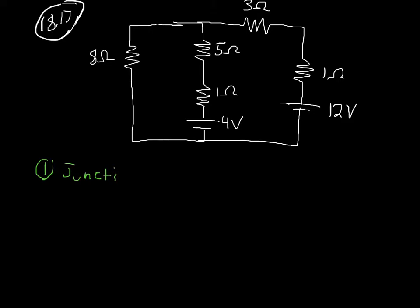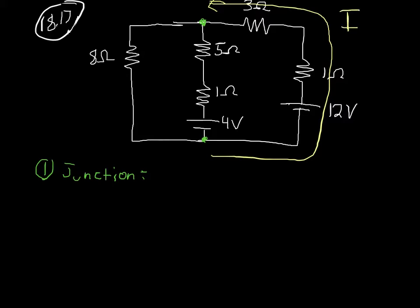First we want to identify where the junctions are so that we know where to apply this rule. I see two junctions — two places where the current can split off. Junction number one and junction number two. I'm going to write my currents around junction number one. I can see that I have some current going into this junction, and I randomly chose current going into this junction from this position. I'll draw the direction that my current goes in this route and call that current I1 — the current going into this junction.